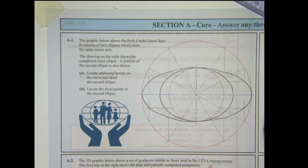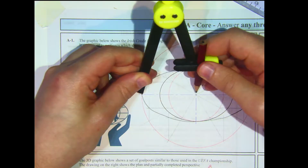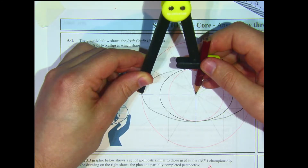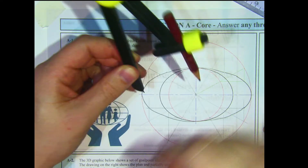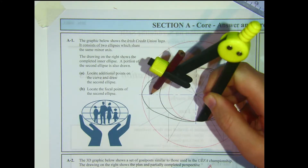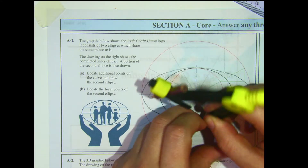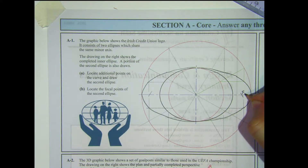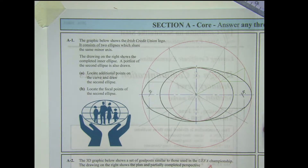The final part of this question is to locate the focal points of the second ellipse. For this, extend your compass so that it equals half the major axis — from the end to the centre. Place the compass point on the end of the minor axis, either top or bottom, as both give the same result, and swing an arc so it cuts the major axis. That gives us our two focal points, F and F1. That completes question A1.